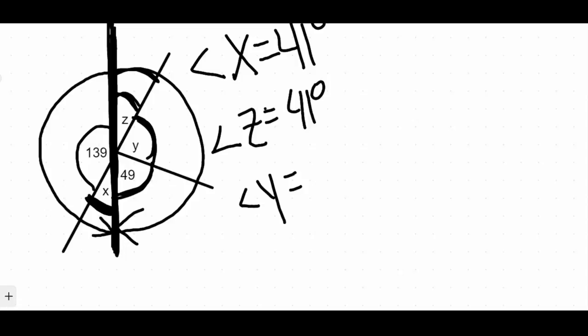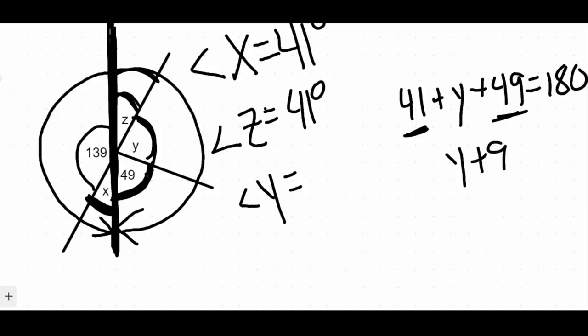So that means that angle Z, which is 41 degrees, plus angle Y, which we don't know yet, plus that 49 over here that they already gave us, all three of these has to equal 180 degrees. So what I'm going to do is add up the 41 plus the 49. So if I add those together, I get 90 degrees there. 41 plus 49 is 90 degrees.